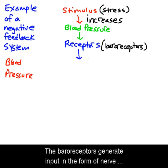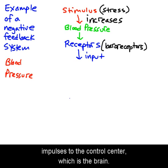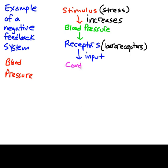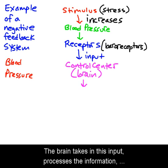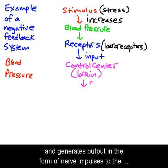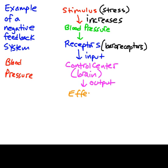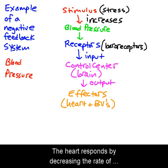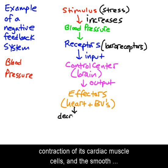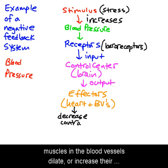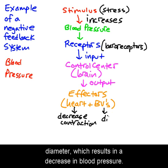The baroreceptors generate input in the form of nerve impulses to the control center, which is the brain. The brain takes in this input, processes the information, and generates output in the form of nerve impulses to the effectors, which are the heart and blood vessels. The heart responds by decreasing the rate of contraction of its cardiac muscle cells, and the smooth muscles in the blood vessels dilate, or increase their diameter, which results in a decrease in blood pressure.